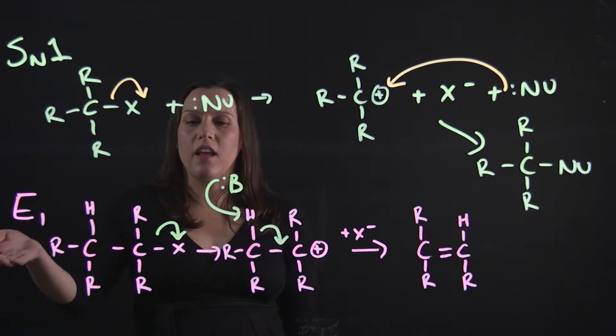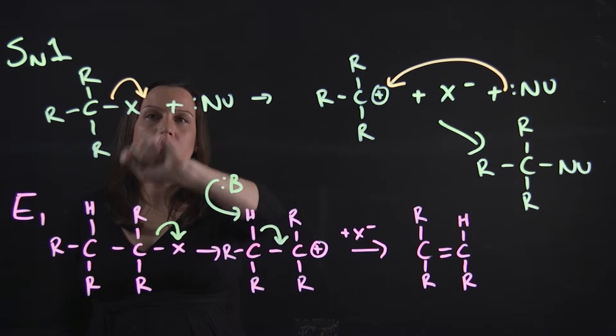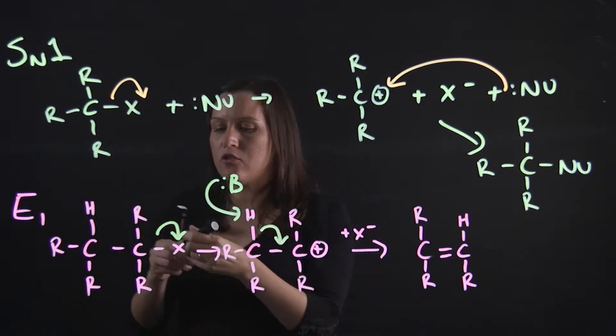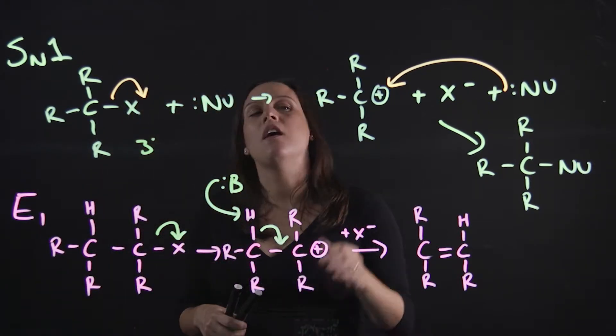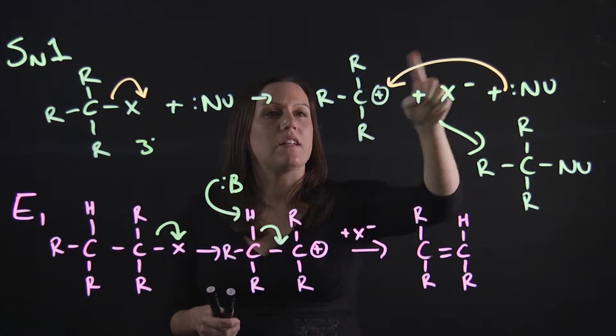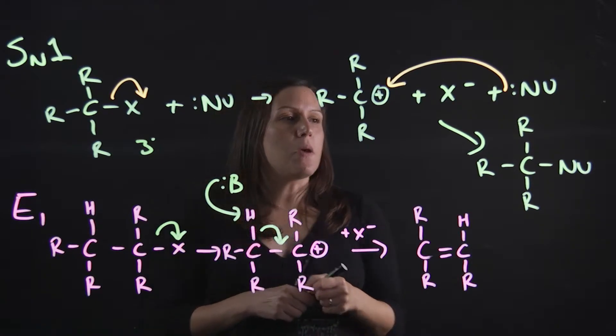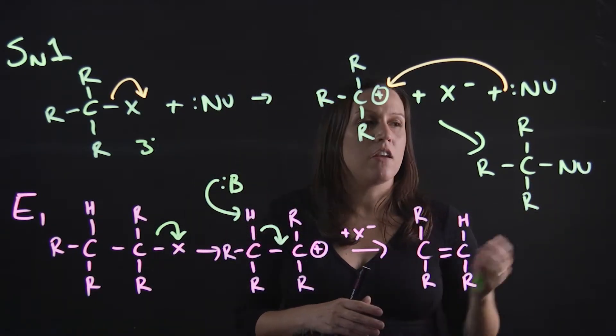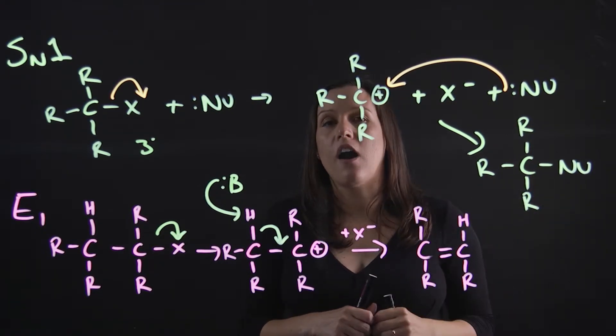If we have a look at SN1 and E1, you can see we've got the X group, or the leaving group, just up and leaving with the SN1. We've got a tertiary carbon there. We've got the carbocation intermediate, and then we've got the nucleophilic attack on that carbocation, and we end up with our product here. Remember, this is a 50-50 mixture of our R and S stereochemistry when that nucleophile attacks, if that's a chiral carbon.